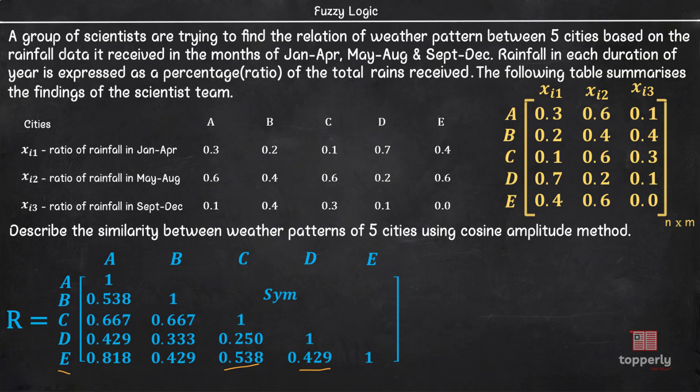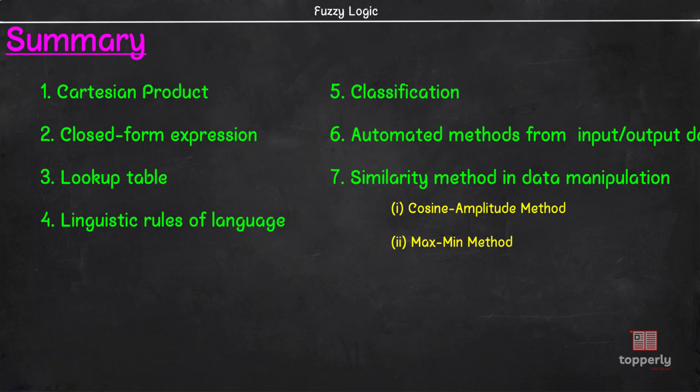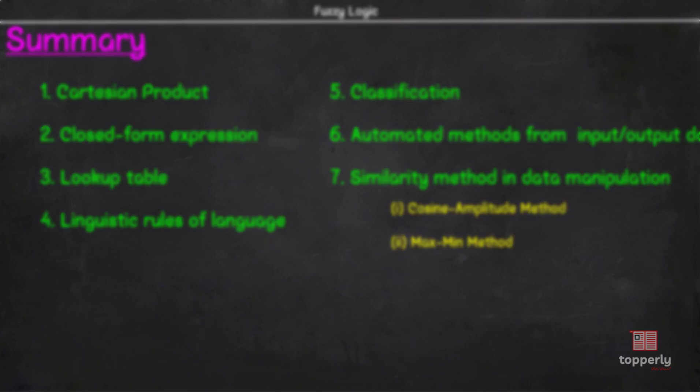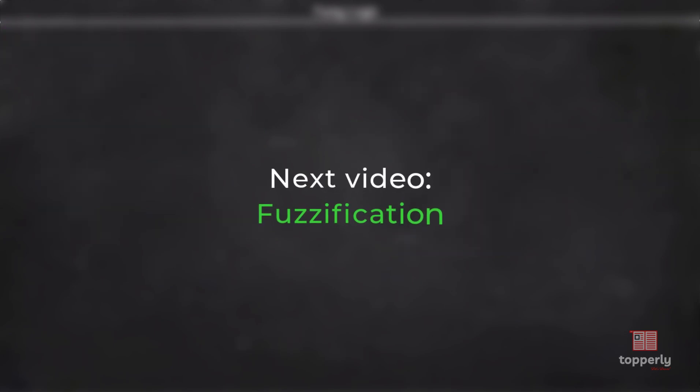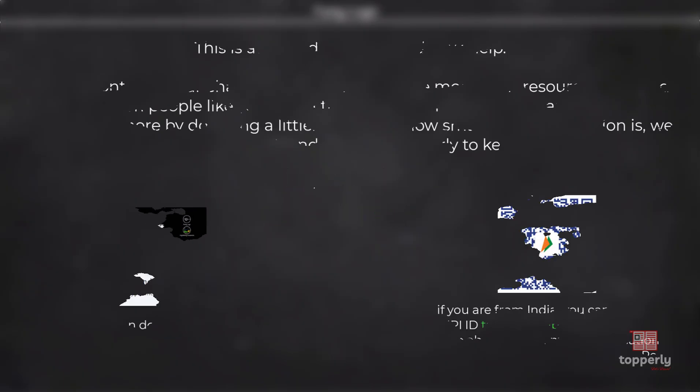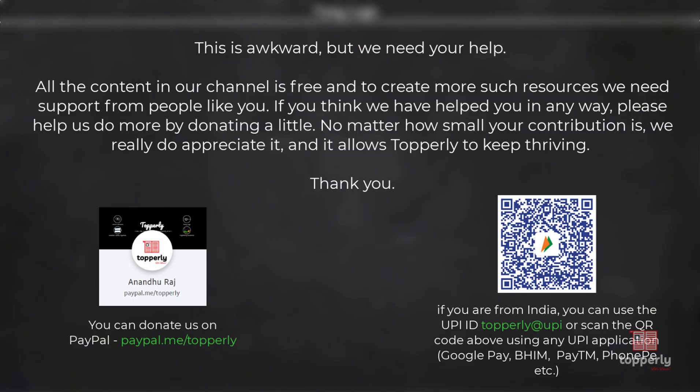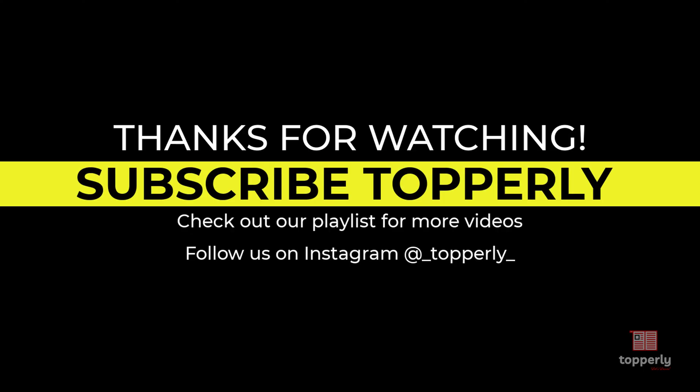That's all for this lecture. To summarize, we learned about 7 different ways of value assignments in relations. We also learned about two specific forms of similarity methods which are cosine amplitude method and max-min method. In the next video, we will learn about the concept of fuzzification. I hope that all the concepts taught in this lecture are clear to all of you. If you have any doubts, feel free to ask them in the comments. Either me or some other viewer will surely help you out. Also, if you found the lecture useful, please like the video and support us by subscribing to the channel. Thank you for watching Topperly and have a great day.